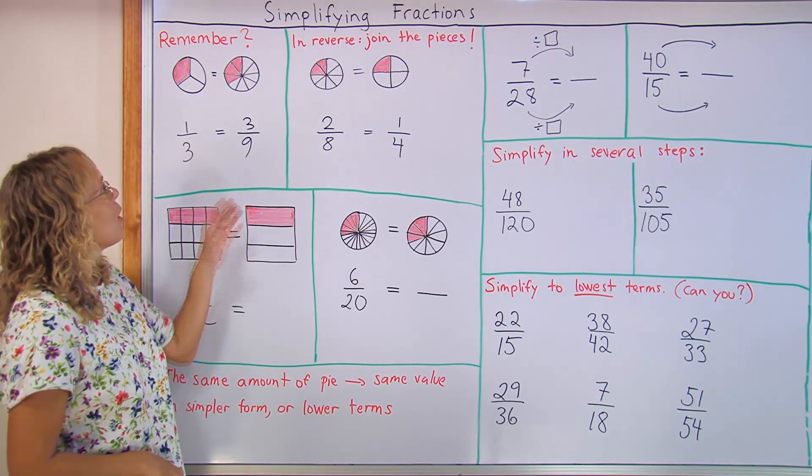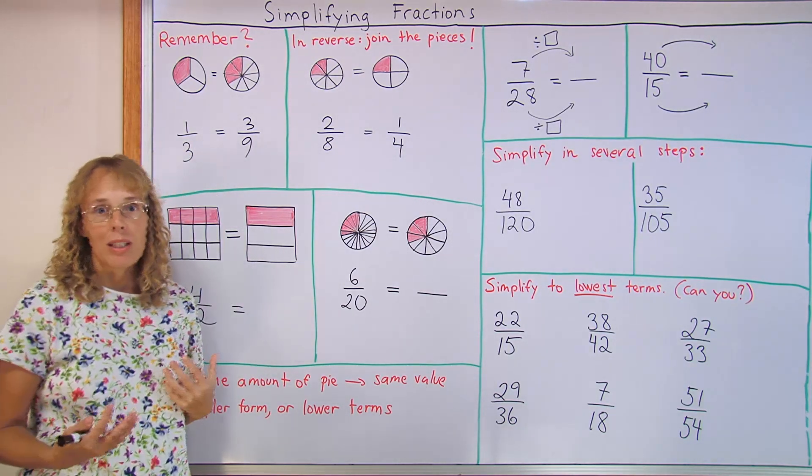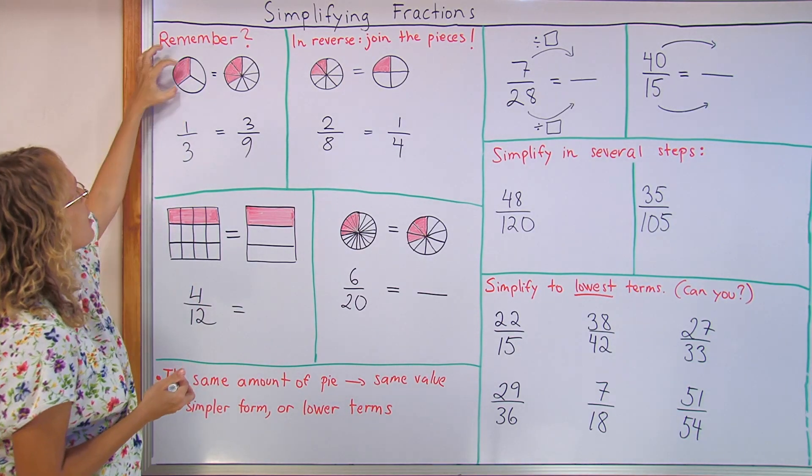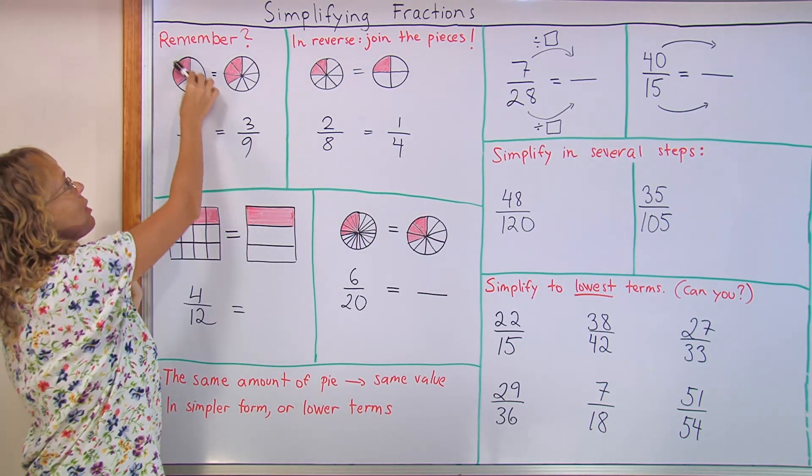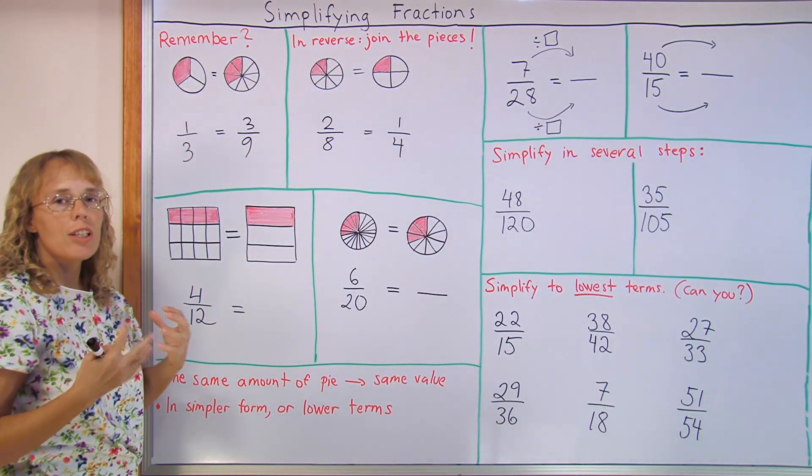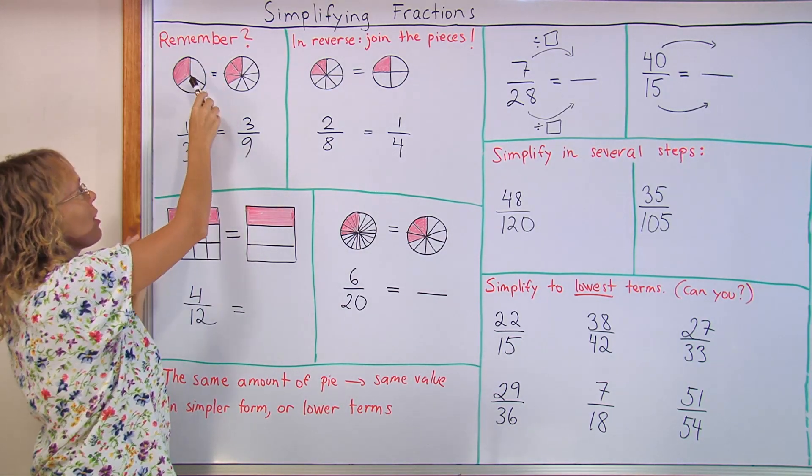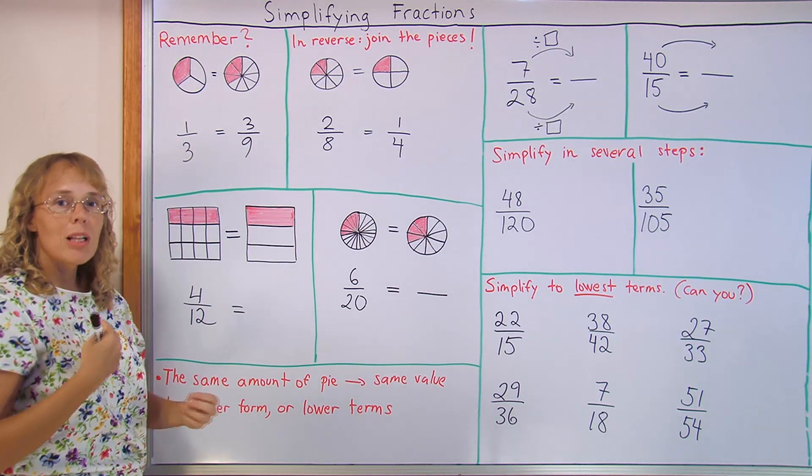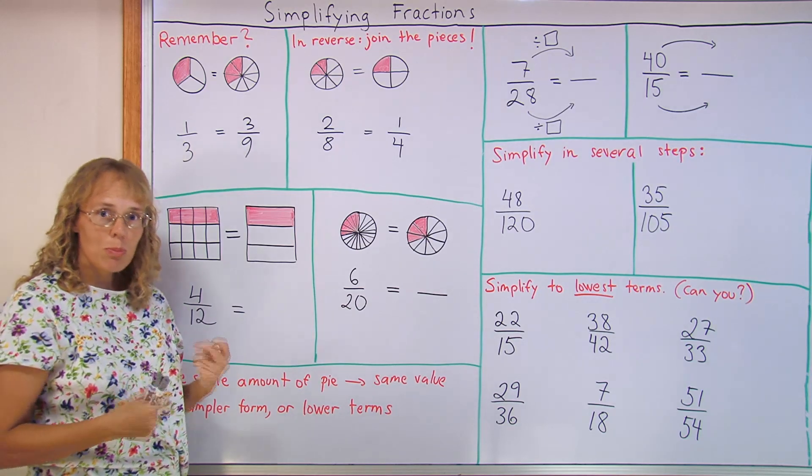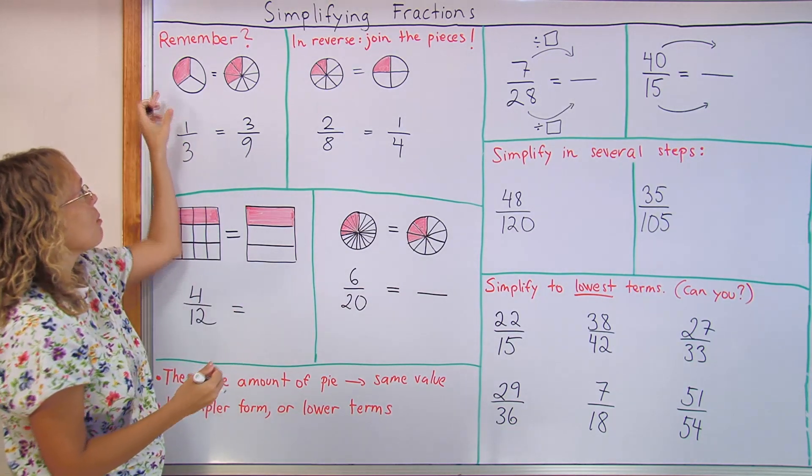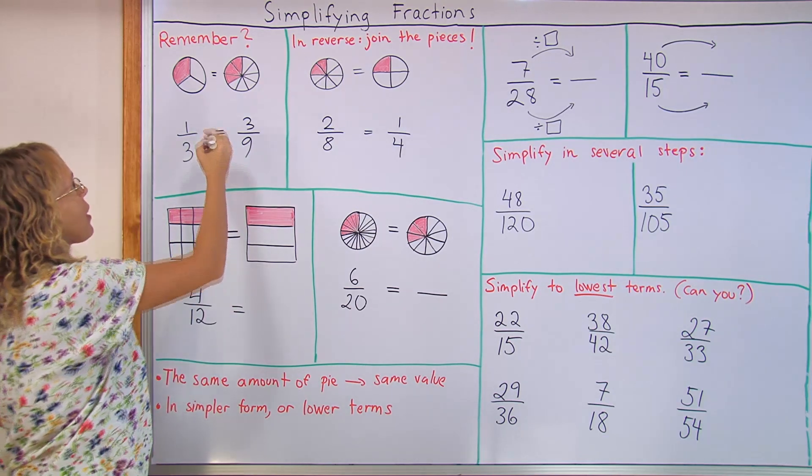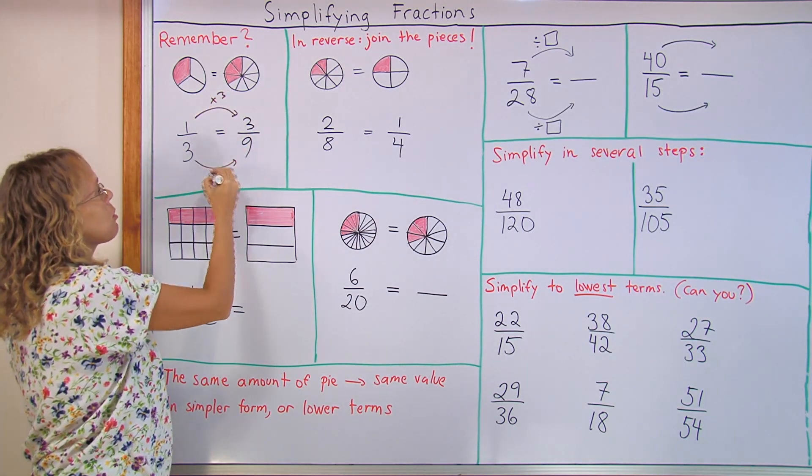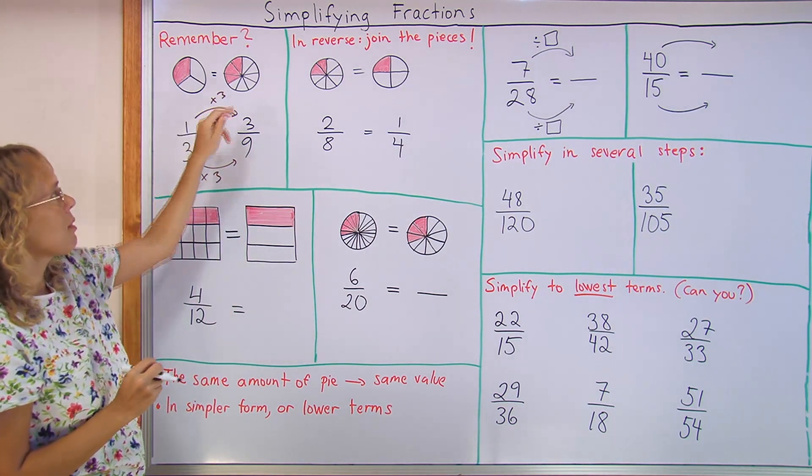Let's first be reminded about the process of equivalent fractions where we split the pieces further. If I take each third and split it into three new pieces, each third gets divided into three more pieces, then we will have three times as many pieces and three times as many colored pieces. I show it like this, drawing these arrows here and times three times three.